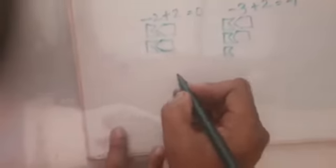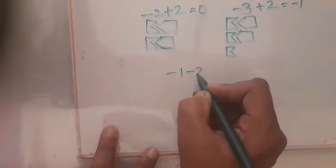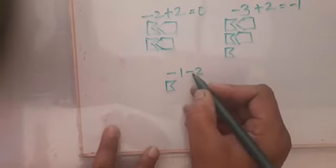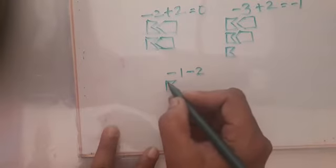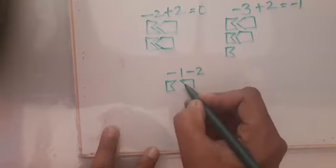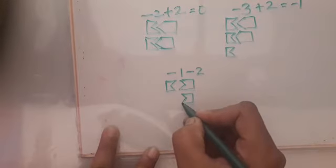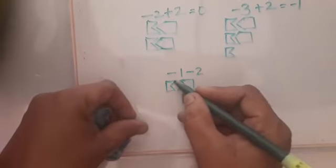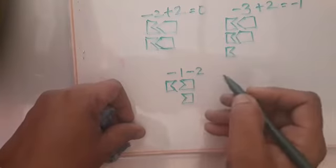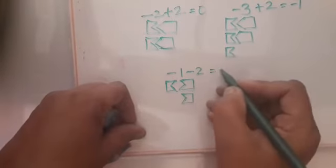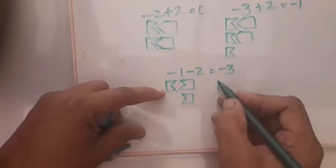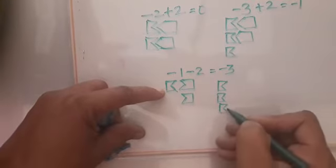One more example: if it is minus 1 minus 2, you need one minus-type symbol, and for minus 2 you require two more minus-type symbols. Will they get interlocked? No — you can see that the space is still remaining. So the answer is minus 3. All the symbols remaining are of the minus type only, giving minus 3.